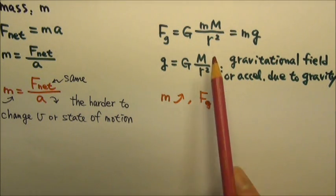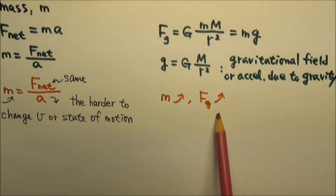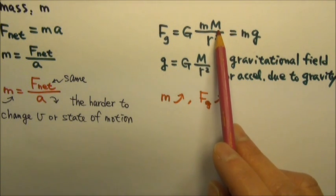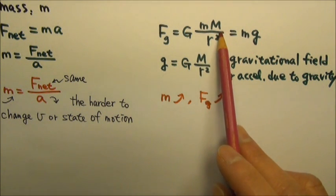This equation tells us that the bigger the mass of an object, the stronger the gravitational force the object can experience from another object, or the stronger the gravitational force it can exert on another object.